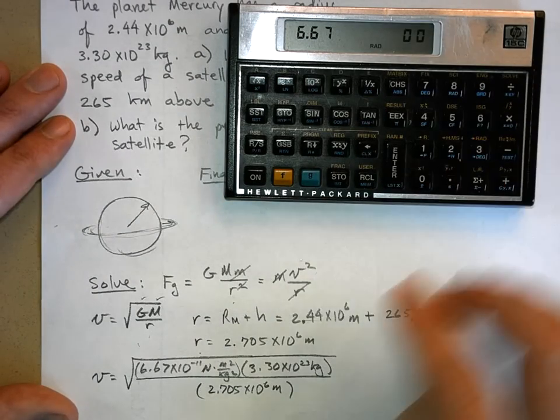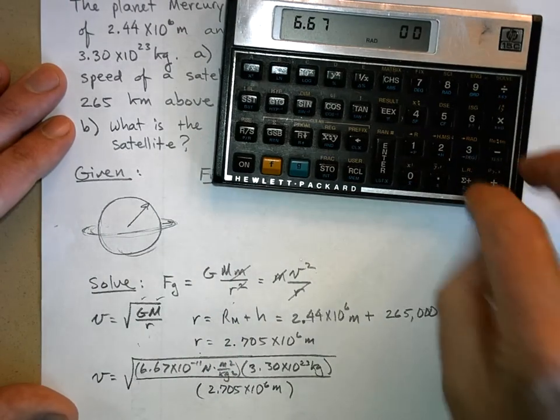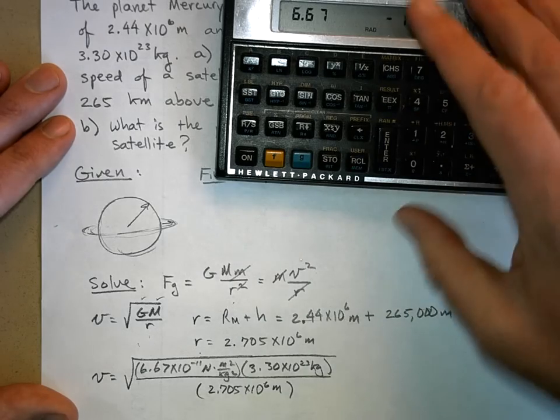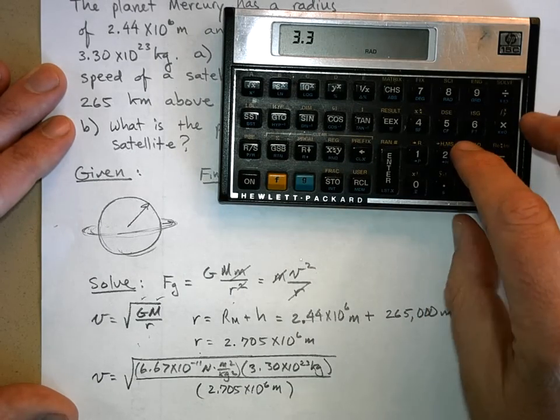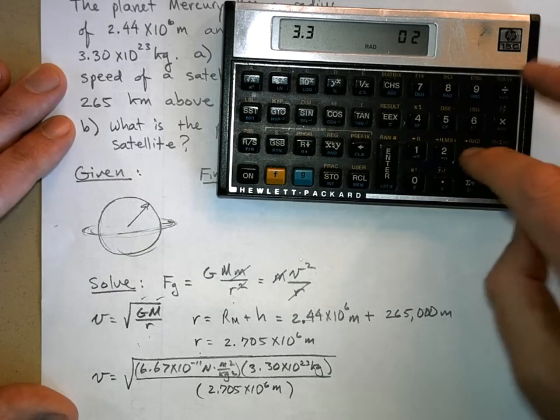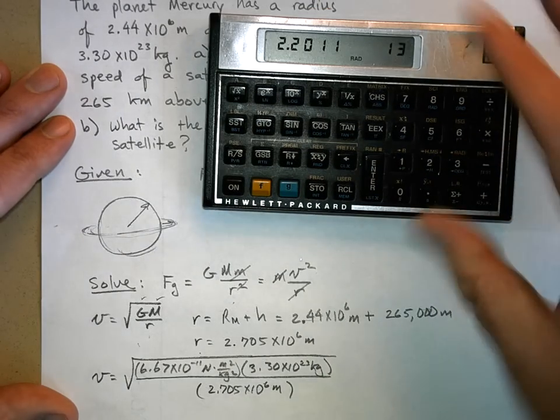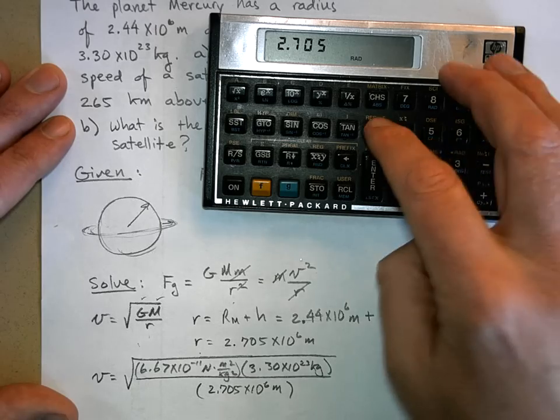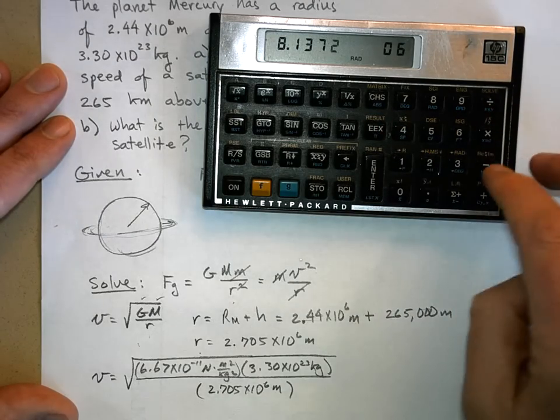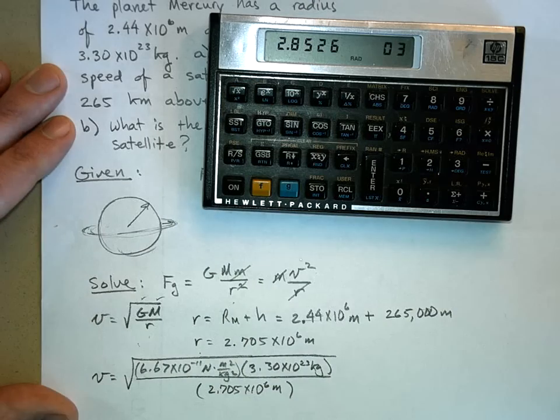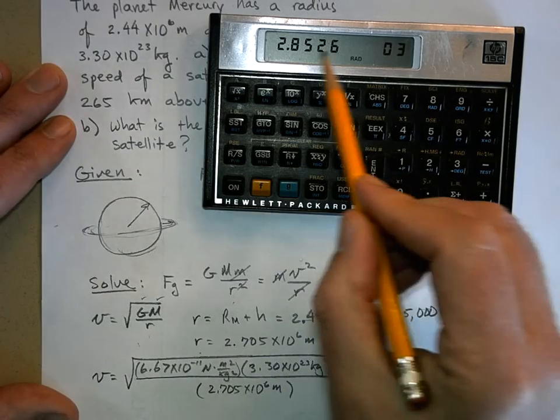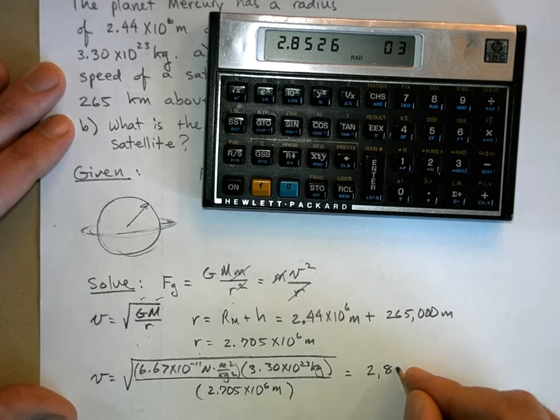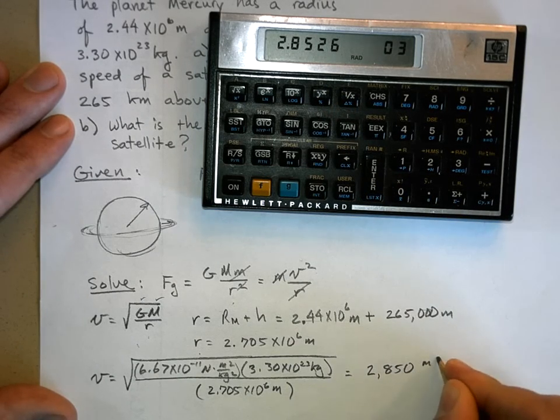6.67 times 10 to the negative 11, times 3.3 times 10 to the 23rd, multiply it, 2.705 times 10 to the 6, divide and square root. Did you get a speed of 2,850? I'm going to round it off to three significant figures: 2,850 meters per second. That's pretty fast.